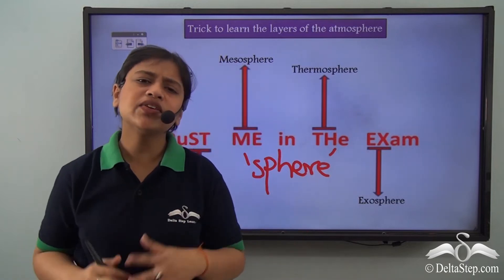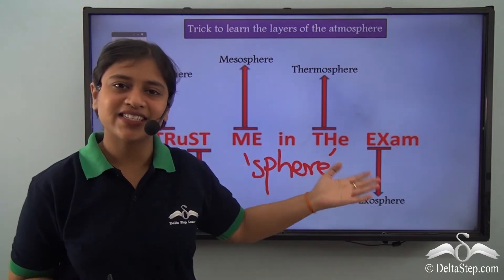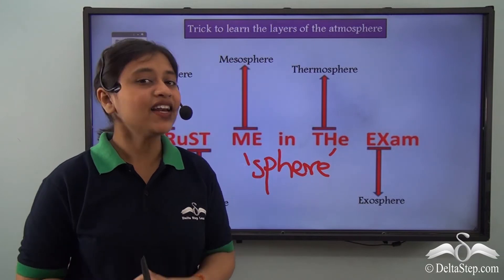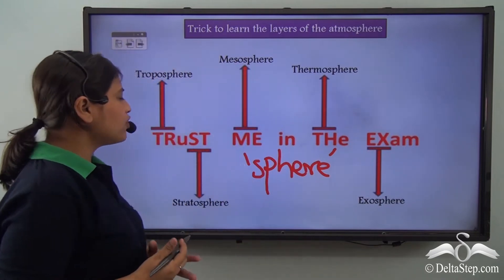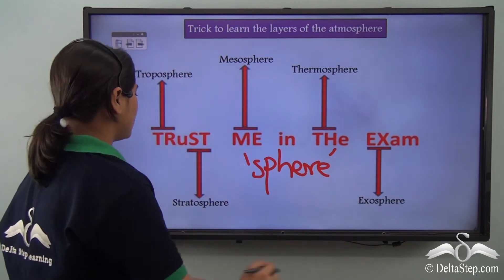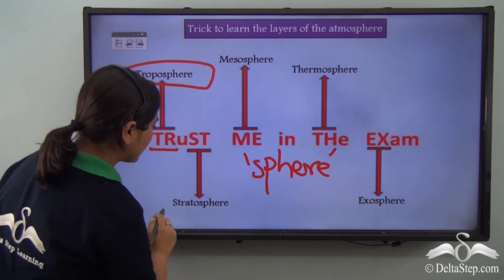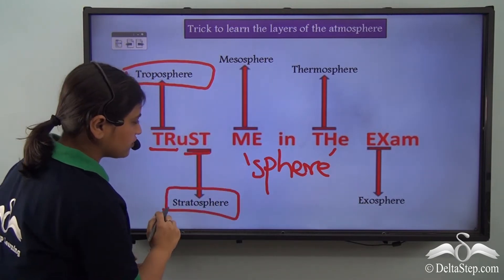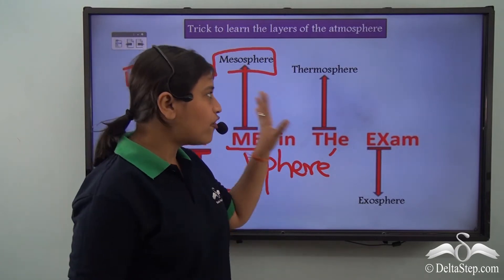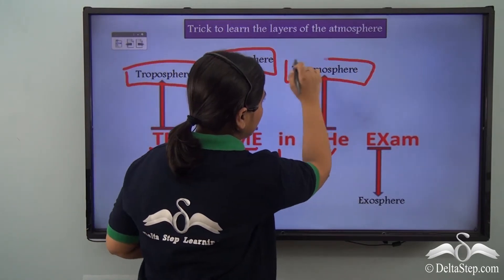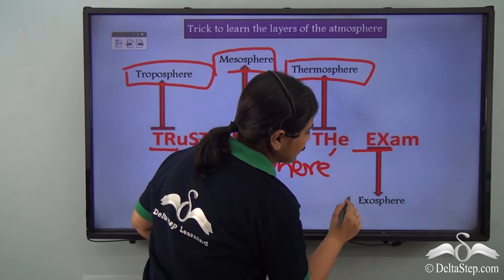How do we remember them in order? I have a trick for you. This simple sentence makes it very easy to remember the name of the layers in order. The sentence says: 'Trust Me In The Exam.' If you focus on the initials — TR refers to troposphere, ST is stratosphere, ME is mesosphere, TH is thermosphere, and EX is exosphere.